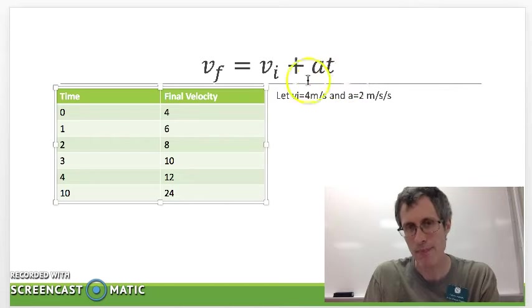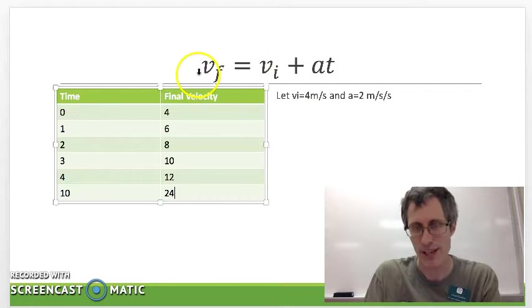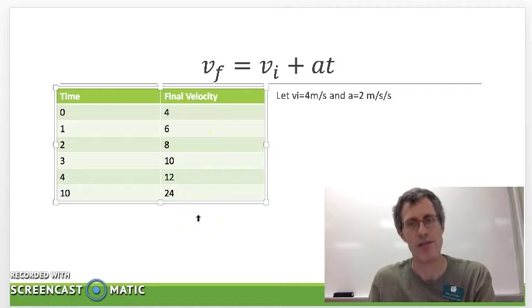Take acceleration, multiply by time, add the initial velocity, you get the final velocity. Congratulations you've just derived the first equation.